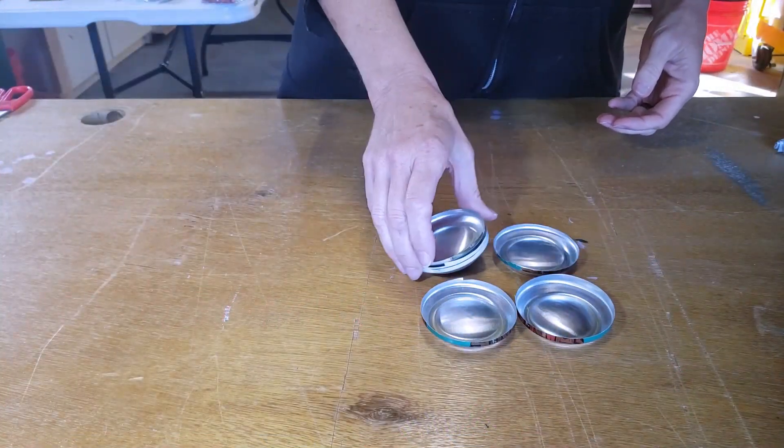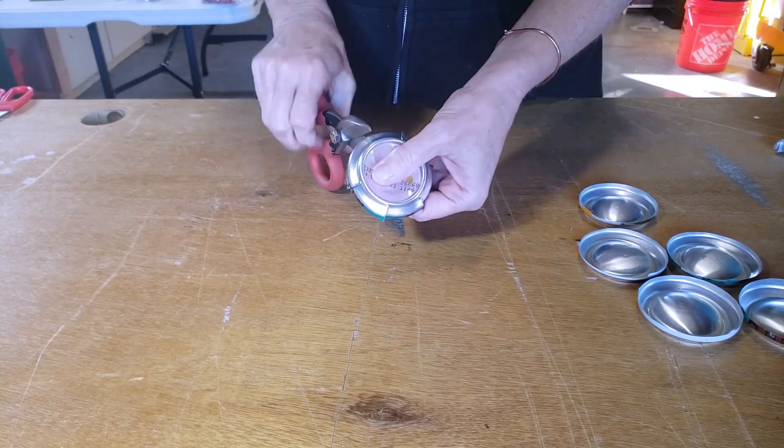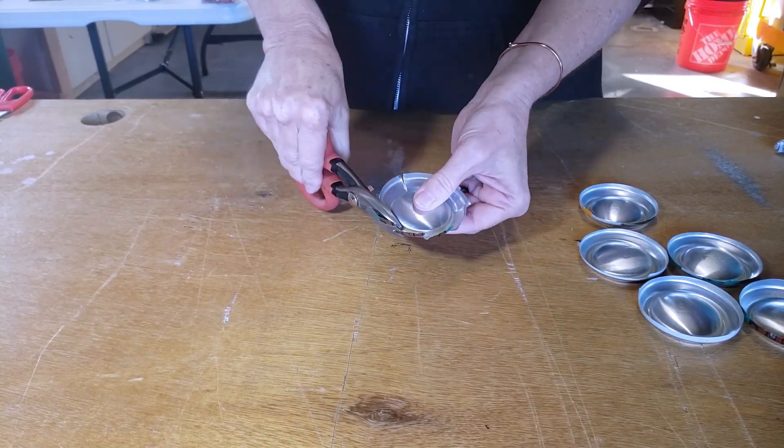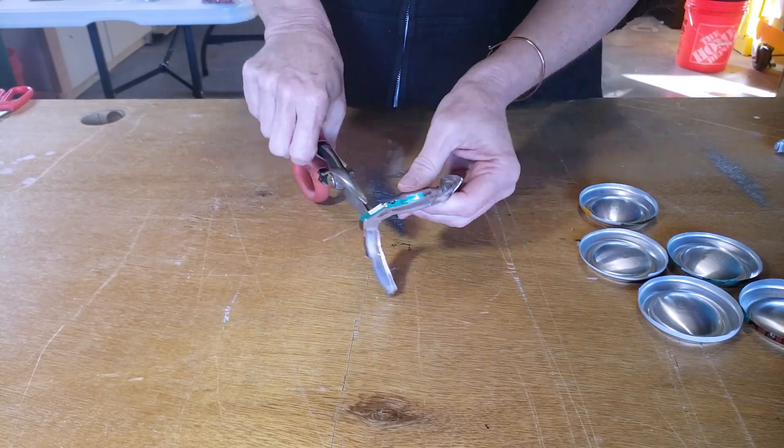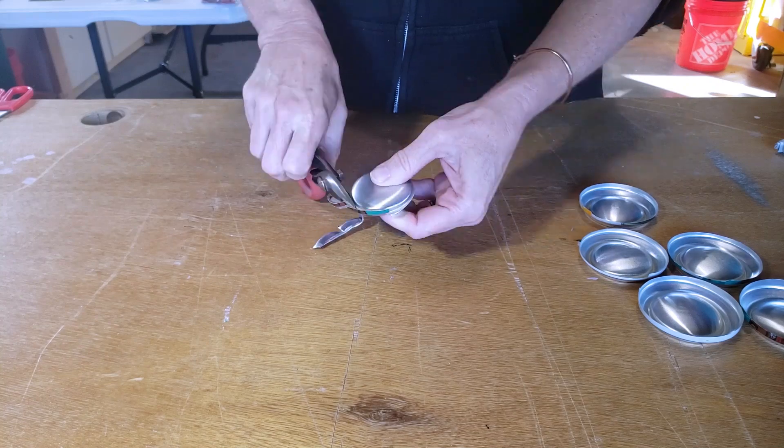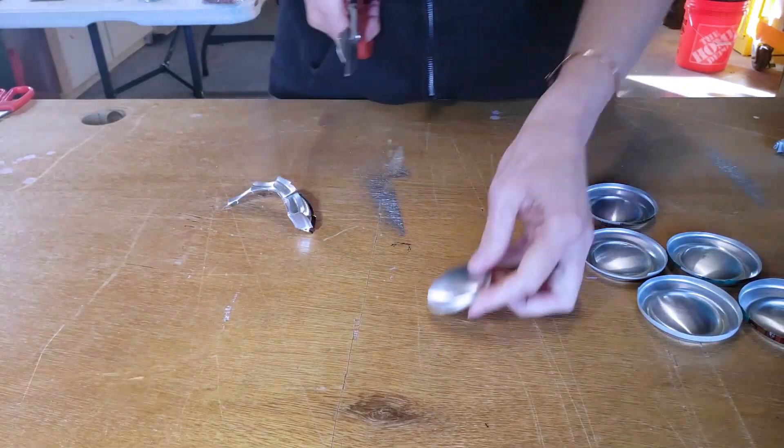For this next project we're going to be making another type of ornament but we're using a different part of the can. For each of these ornaments you need two can bottoms and to prepare the pieces I'm using my tin snips again to trim off the excess metal so that only the domed portion is left.